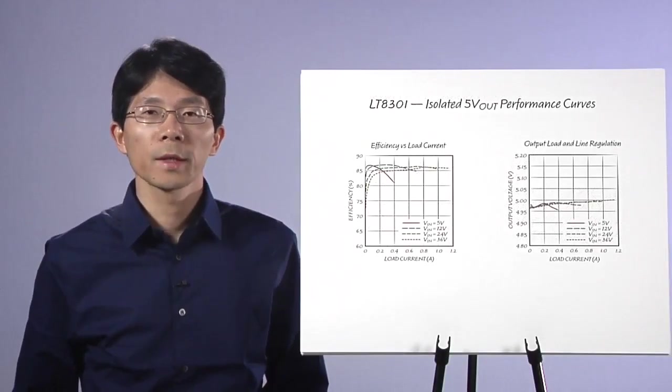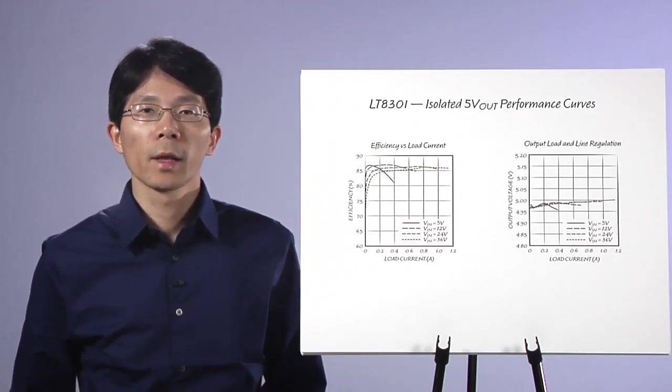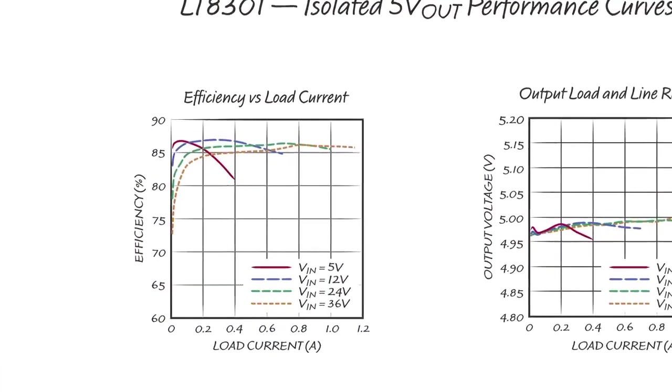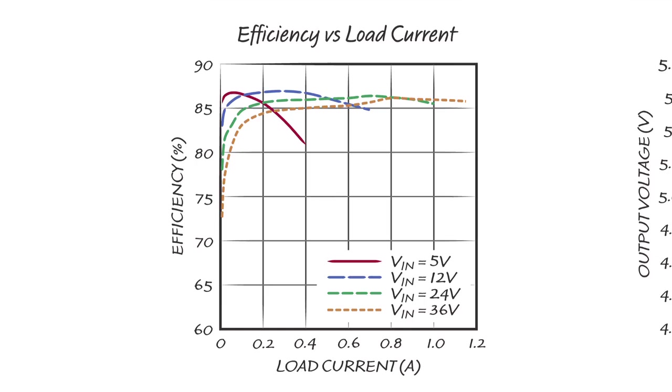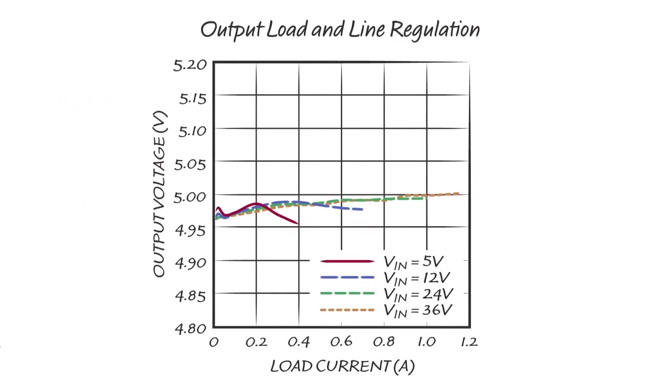The 5-volt isolated flyback converter solution is really simple and compact. Now, let's take a look at its performance. The graph on the left shows the power efficiency versus load current. At 12-volt input, its power efficiency stays above 82% all the way from minimum load to full load and peaks at 87%. The graph on the right shows the output load and line regulation. It is better than plus minus 1% regulation across the full load and line range.